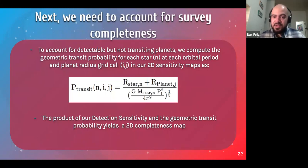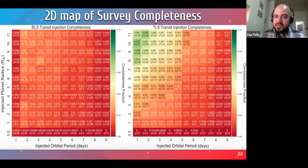So now that we have our 2D map of sensitivity for transit detection, we need to account for detectable but not transiting planets. So in order to do so, we calculate the geometric transit probability using this equation, where we do so for each orbital period and planet radius in our 2D map. So we have a 2D map of geometric transit probability, and we multiply that by our detection sensitivity 2D map, and this yields us a 2D map of survey completeness. And because TLS performed better in terms of detection sensitivity, it also has a better map of 2D survey completeness. So for short period large transits, we're able to have a survey completeness ranging from about 3% to almost 7% using TLS. But using BLS, uniformly it ranges from about 2% to 3%. So again, TLS is a more favorable technique when using our photometry.